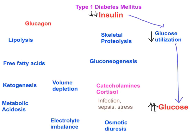On the other hand, a decrease in insulin level leads to skeletal muscle proteolysis. This skeletal muscle proteolysis is seen in type 1 diabetes mellitus patients. The increased proteolysis means amino acids are released from skeletal muscles and carried to the liver for the gluconeogenesis process.